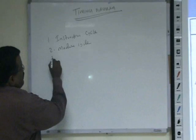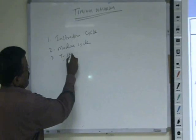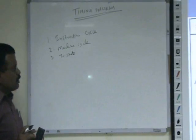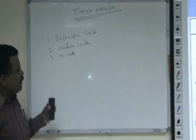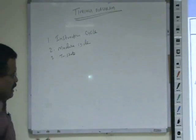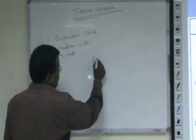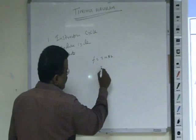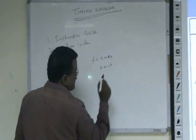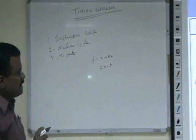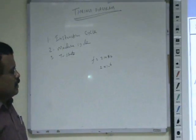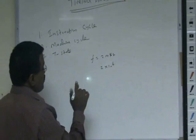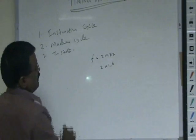Then, T-state. A portion of an operation performed in one clock period is defined as a T-state. If the system clock frequency is 2 MHz, that means the oscillator will generate 2 × 10^6 T-states per second. So the operation performed during one system clock period is defined as a T-state.